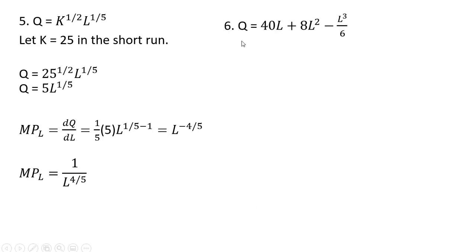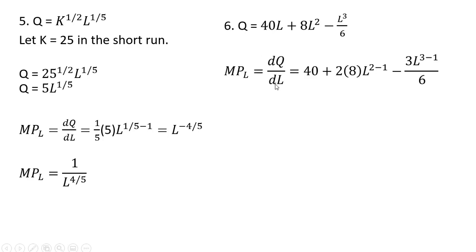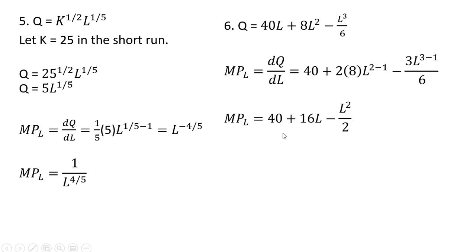Example 6. Here we have a cubic production function. Taking the derivative with respect to L: the derivative of 40L is 40, then 8L squared becomes 16L, and then bringing down the 3 in front and subtracting 1 from the exponent on the last term. Simplifying all of that gives us our marginal product of labor.